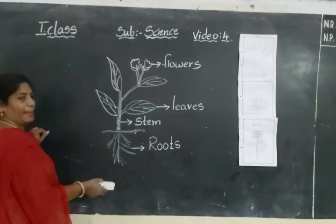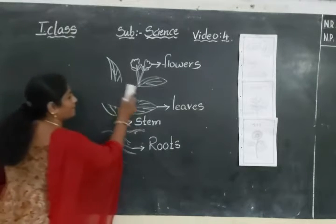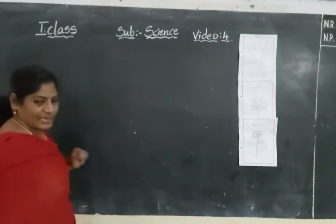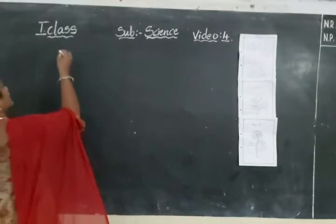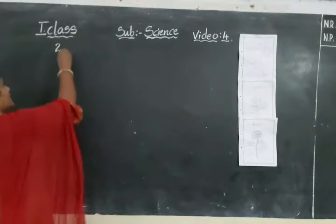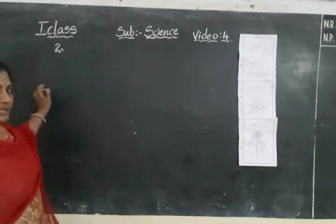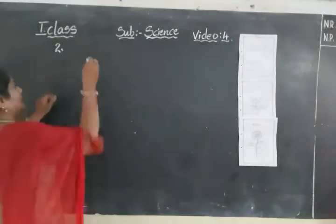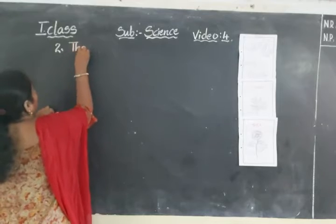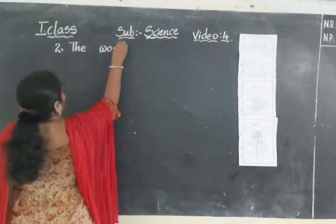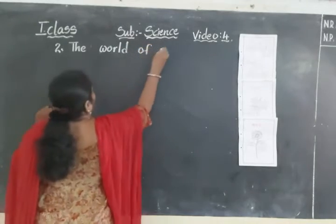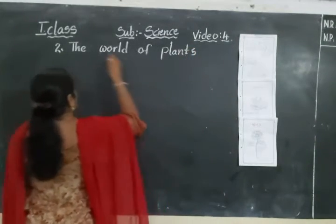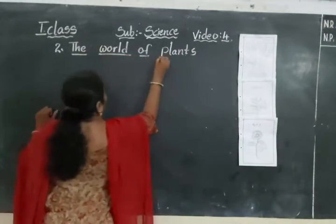Look at the board. These are the parts of a plant. Coming to the lesson — today, science second lesson, we are going to learn. The first lesson was living and non-living things. This is the science second lesson: The World of Plants.